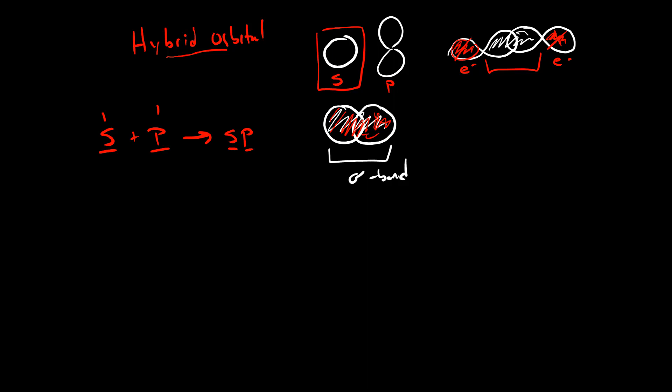This sp orbital has partial s property, partial p property, and if we started with something that looks like these two pieces individually, when they combine together, they make something that looks similar to a p orbital, but it now has the ability to hold four electrons.